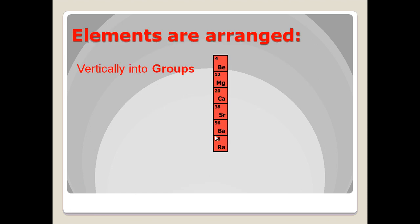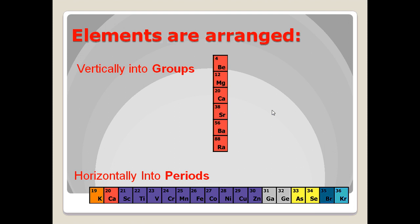Like I said, vertically into groups, horizontally into periods, and there are some special characteristics and things the periodic table will tell you based on the group or the period.